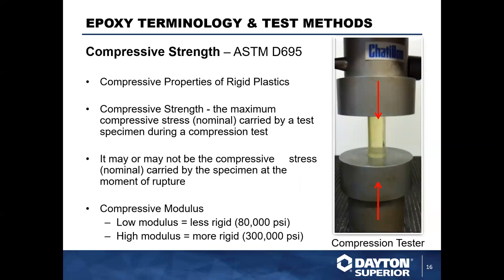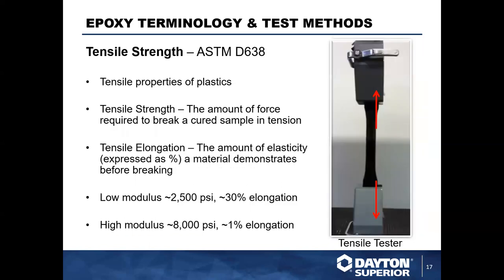Compressive strength is tested per ASTM D695, covering compressive properties of rigid plastics — measuring maximum compressive strength of the specimen. For modulus: low mod is less than 80,000 psi and more rigid material is around 300,000 psi. For tensile strength per ASTM D638, a pull test stretches the cured sample until it snaps. Low modulus material shows approximately 2,500 psi with 30% elongation, while high modulus is approximately 8,000 psi with 1% elongation.